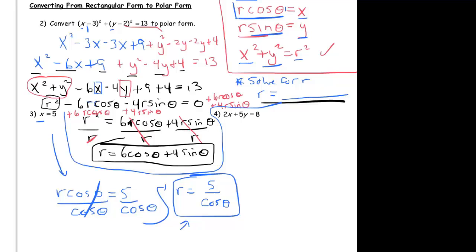And let's do that last one over there. 2x + 5y = 8. In rectangular form that's a line, right, it's just a line. And so what does the equation of a line look like in general in polar form? Well, I'm going to turn that x into an r cosine theta.